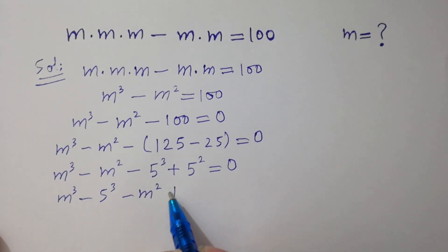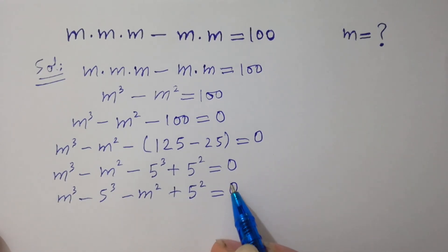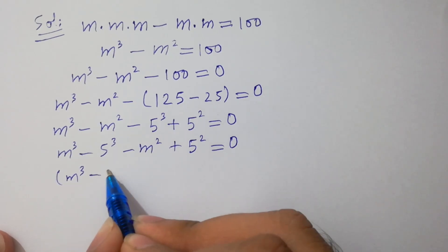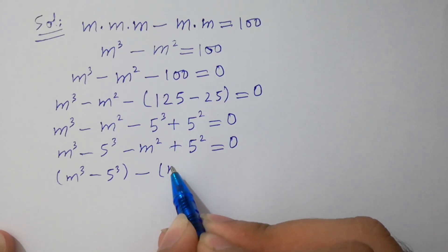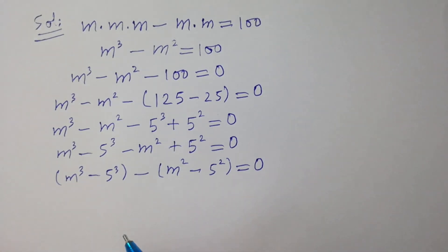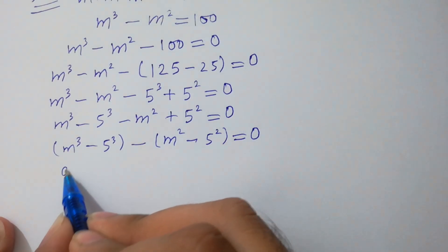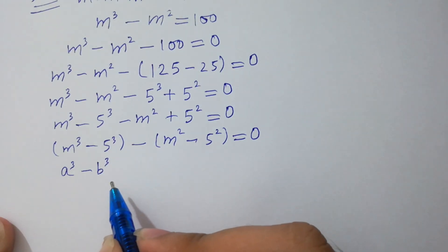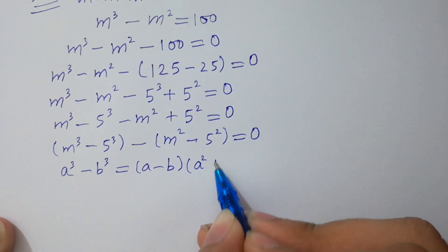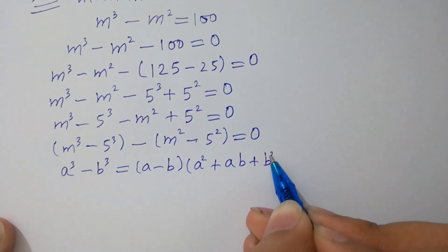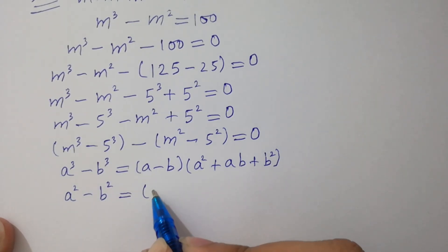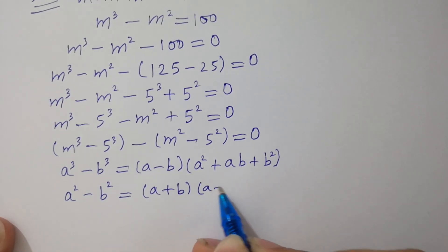We get M cube minus 5 cube minus (M square minus 5 square) equal to zero. As we know, the formula A cube minus B cube equals (A minus B)(A squared plus AB plus B squared), and A square minus B square equals (A plus B)(A minus B).